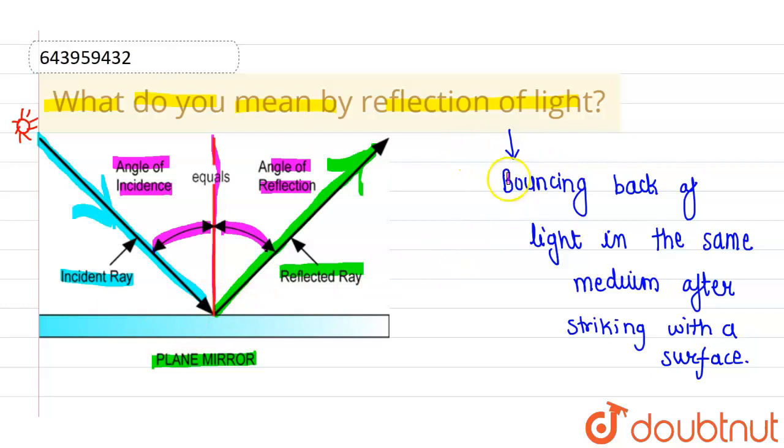So this whole process is known as reflection of light. In short, bouncing back of light in the same medium after striking with the surface. I hope you understood. Thank you.